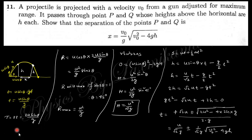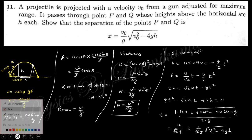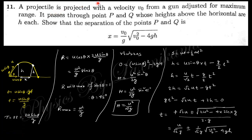Next question: a projectile is projected with velocity v-naught from a gun adjusted for maximum range, so the range will be maximum. It passes through points P and Q whose heights above the horizontal are h each. You must take this separation as shown.